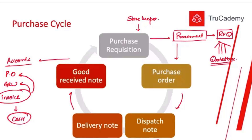After that, the accounts department will make the payment through cash or bank. This is what we call the purchase cycle. Every time our organization wants to buy something, the same purchase cycle runs. All the documents involved in the purchase cycle are called supporting documents, and for each step of the transaction we need to produce them and record them in our accounting system.